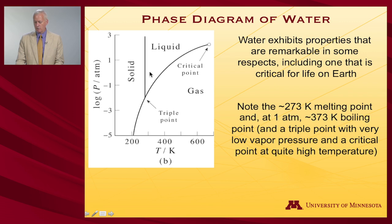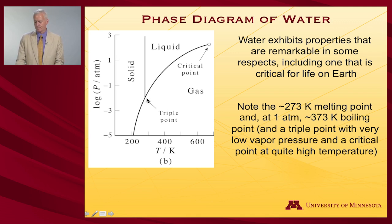If we keep going until we get to the liquid-gas transition, and look down, that's about 373 Kelvin — that's the boiling point. Then there's a triple point at a very low vapor pressure — less than a tenth of an atmosphere, almost about a hundredth of an atmosphere — and a temperature not too different from the actual atmospheric melting point.